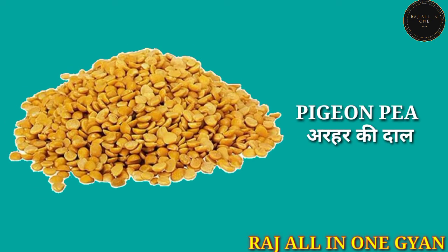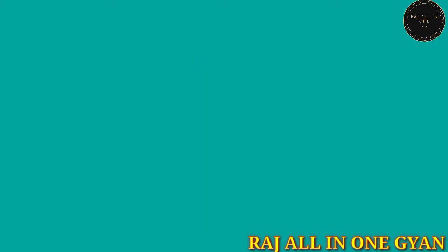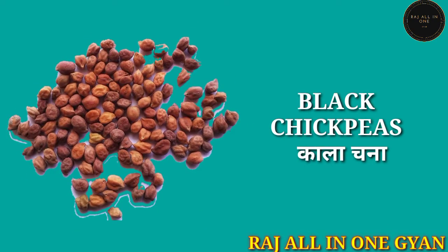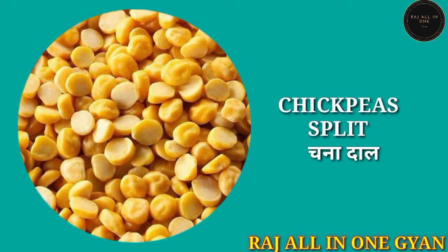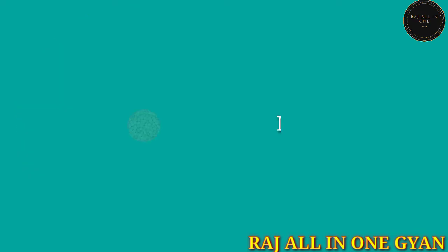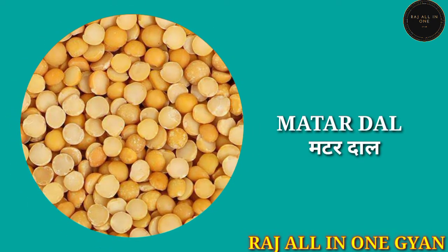Pigeon pea — Arhar ki daal. Black chickpeas — Kala chana. Chickpea split — Chana daal. Matar daal.